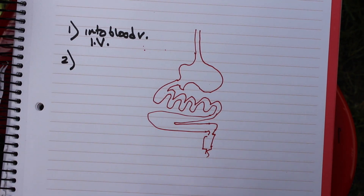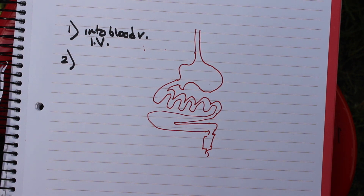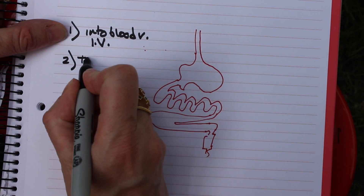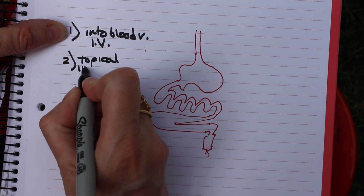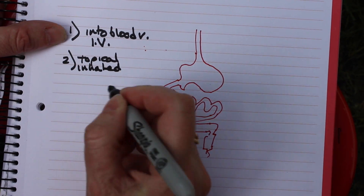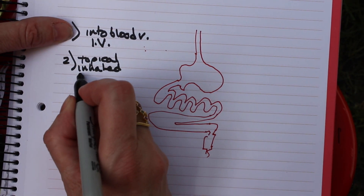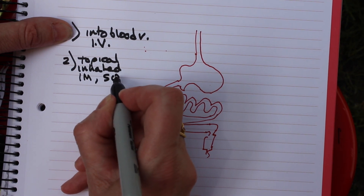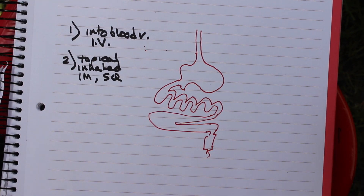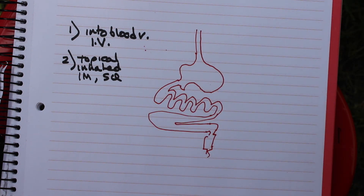Another way is to put the drug somewhere in the body and it'll eventually soak into capillaries, into veins, and then get into your body. That could be topical, inhaled, smeared on your skin, injected intramuscularly, or subcutaneously — pretty much any way of getting the drug into the bloodstream other than IV.